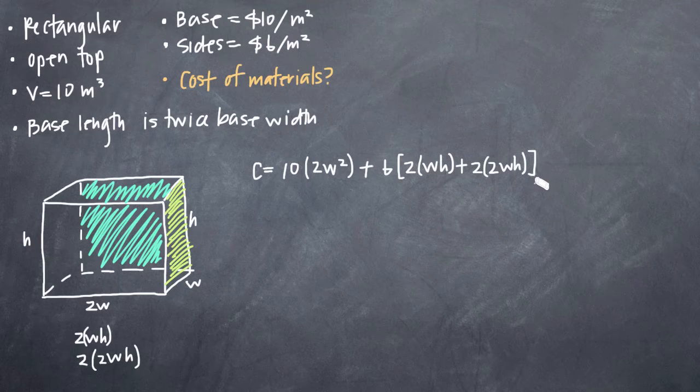Now we just need to simplify our cost function and make sure that it's in terms of w because we've been asked to express the cost of the materials as a function of the width of the base. And we know that the width of the base is w. So let's go ahead and simplify our cost function.